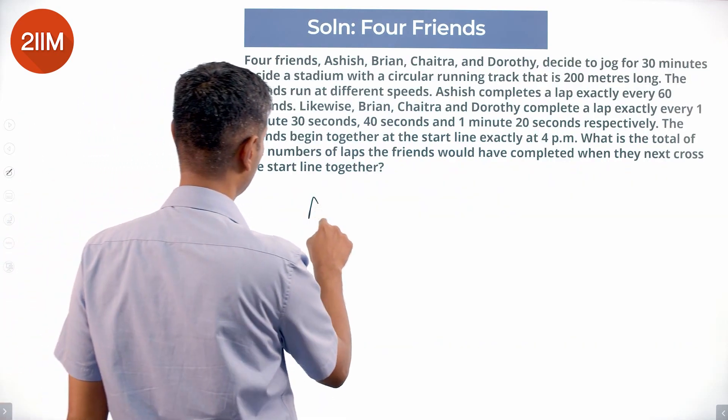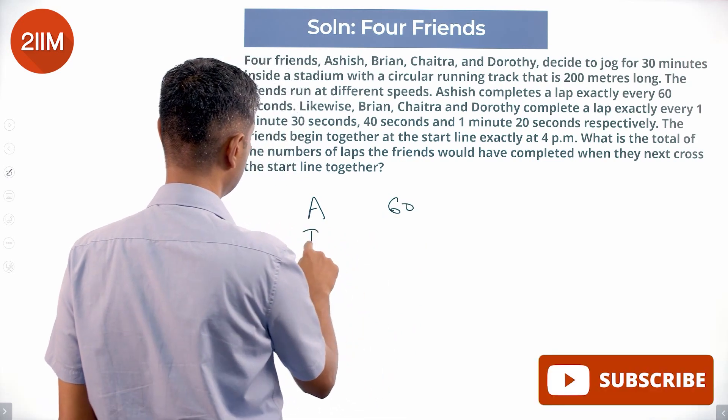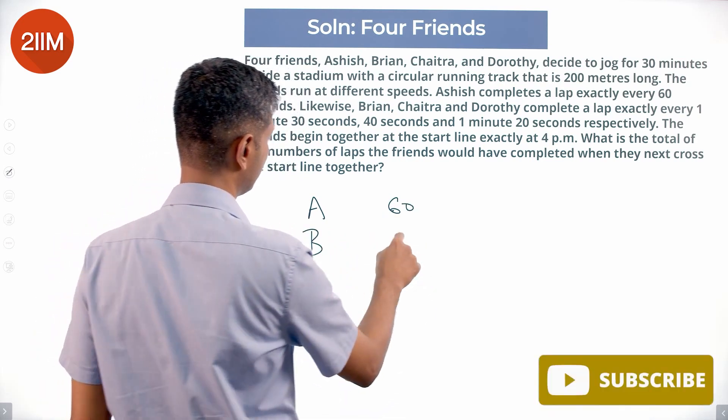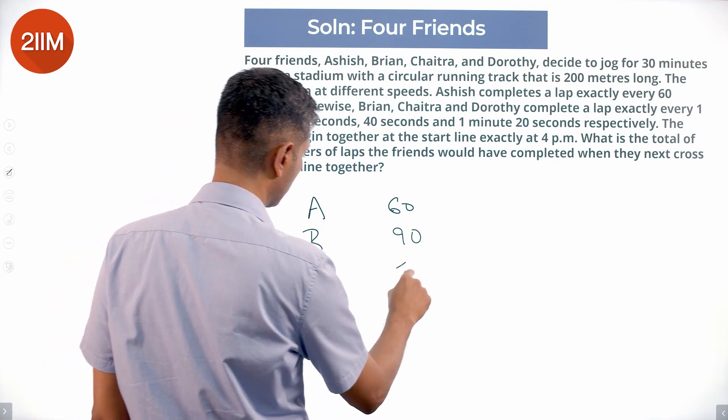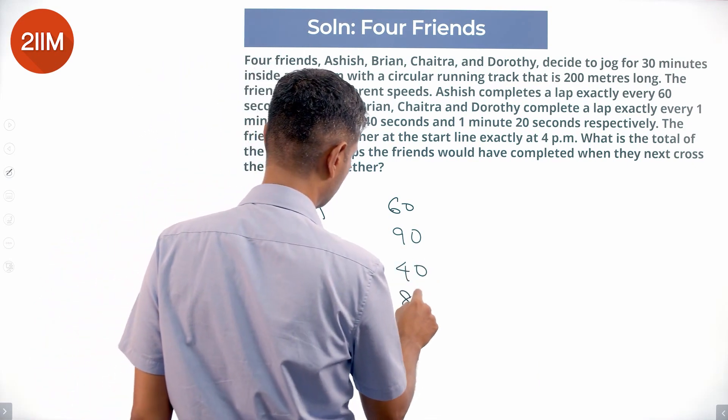Lovely, I'm going to take this data. A, how long does A take to complete? 60 seconds. B, B takes 1 minute 30 seconds, 90 seconds. C takes 40 seconds. D takes 1 minute 20 seconds, 80 seconds.